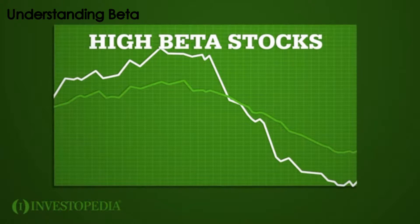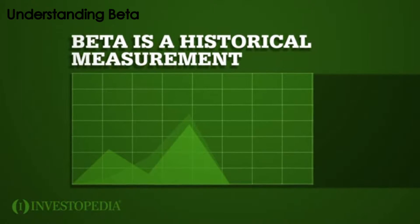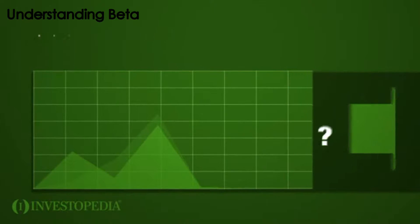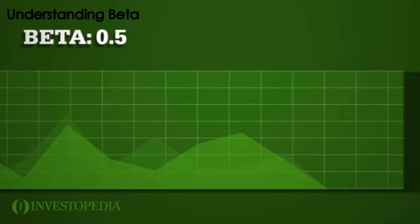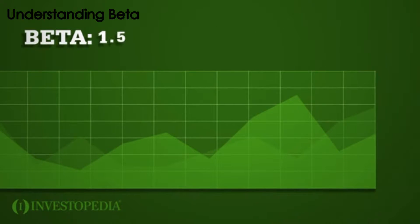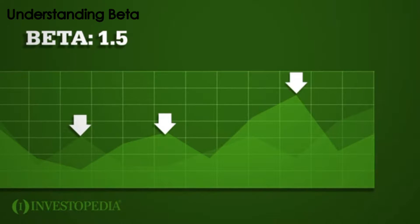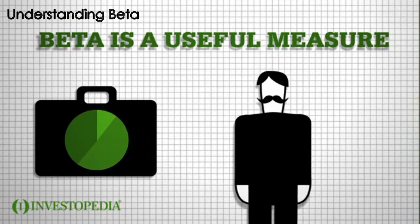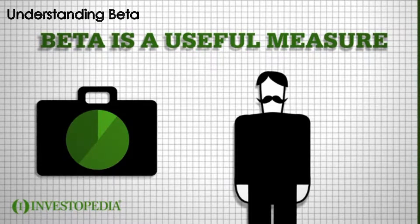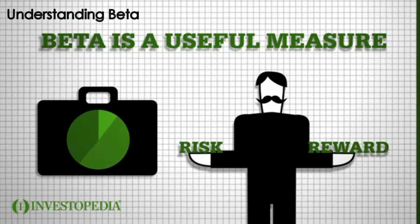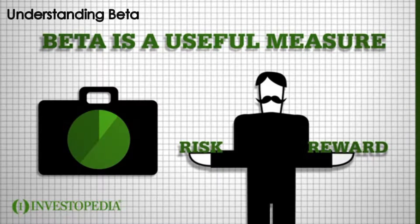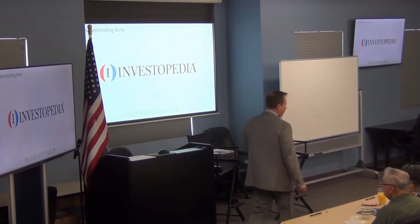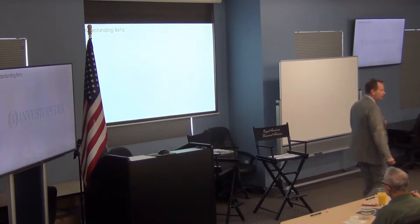It is important to remember that beta is a historical measurement, so it can't predict the future. The beta of a stock will change as more historical data points are added, and many events will prove entirely unpredictable. Beta is a useful measure for investors because it helps them create portfolios that match their risk tolerance.